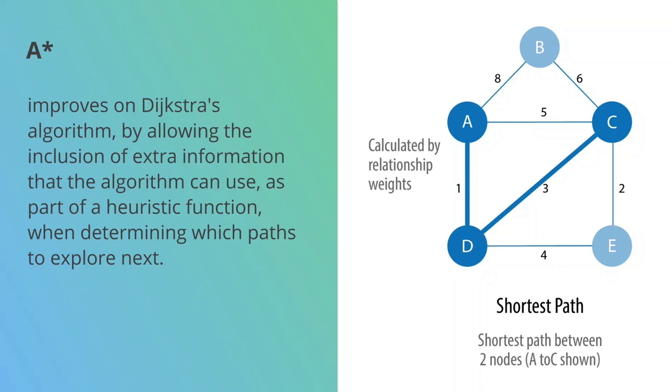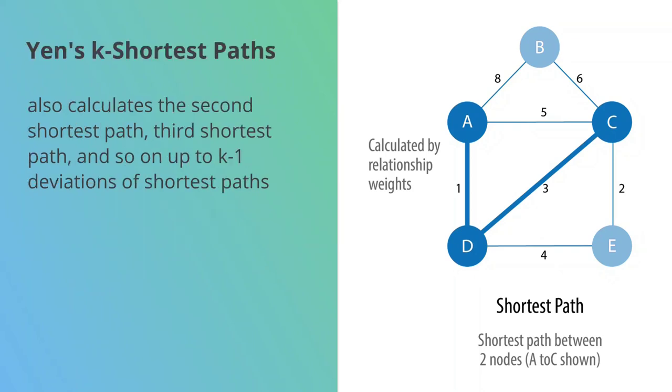Another one is Yen's k-shortest path algorithm. Here, instead of just finding the shortest path, we're looking for the second shortest path, the third shortest path, and so on, up to a specified value which we would call the k value.